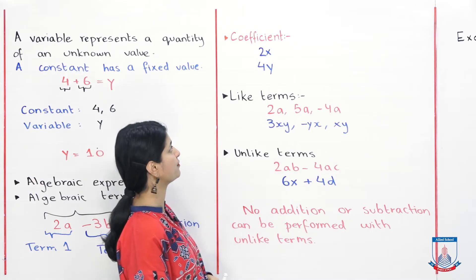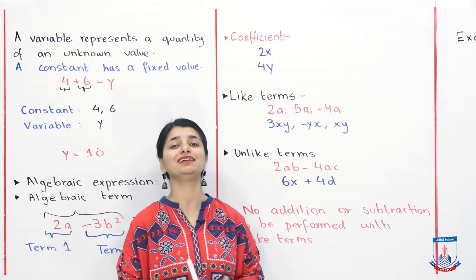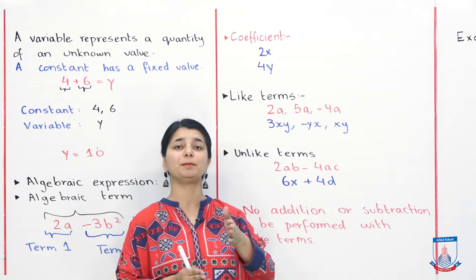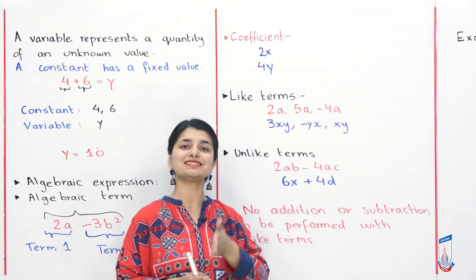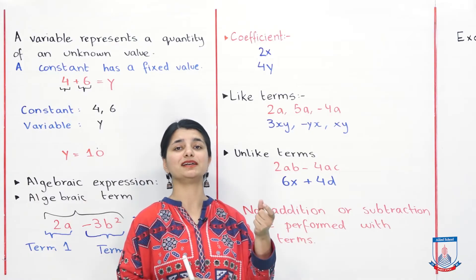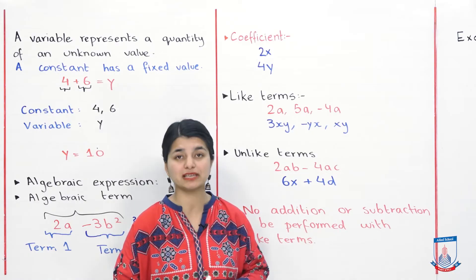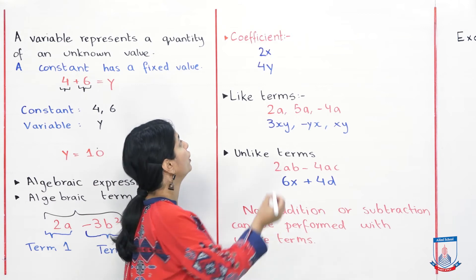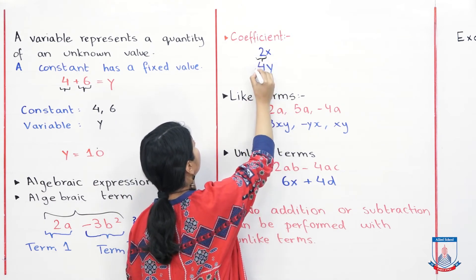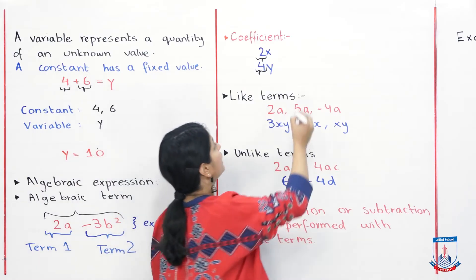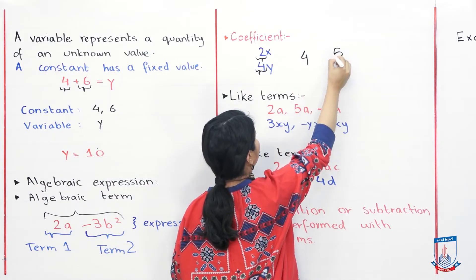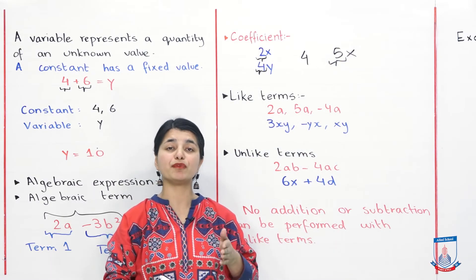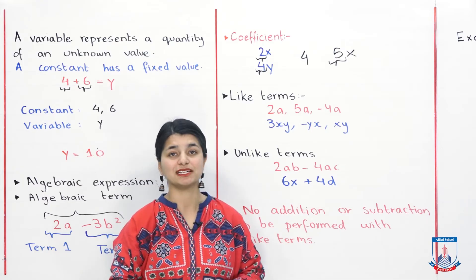The next term we have to talk about is coefficient. What is a coefficient? A coefficient is the number that comes right before your variable. The concept is different from constants — like in 6 plus 4 equals y, 6 is a constant because it stands alone, 4 is a constant. But when a number comes together with a variable, that number is our coefficient, before the variable. So in 2a, 2 is our coefficient. In 5x, 5 is our coefficient. This is how whenever there is a number before the variable, that is called our coefficient.